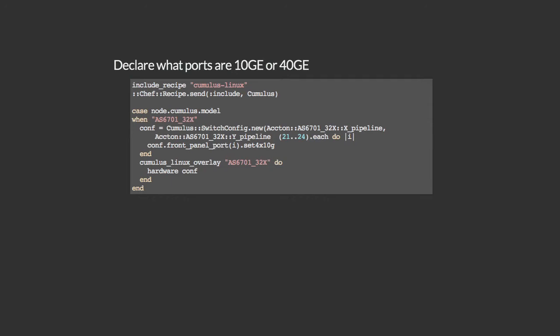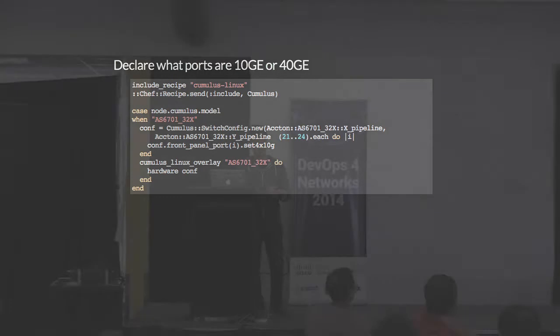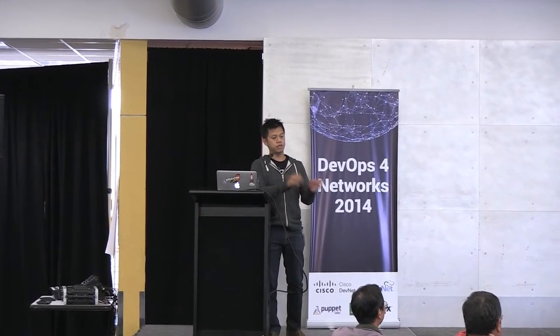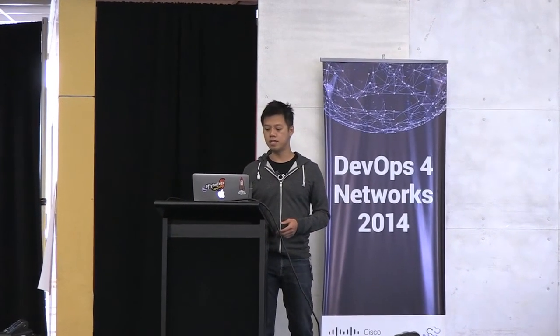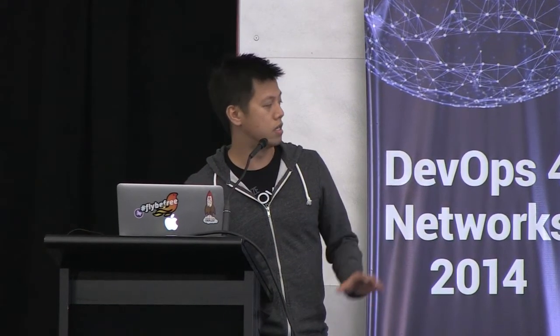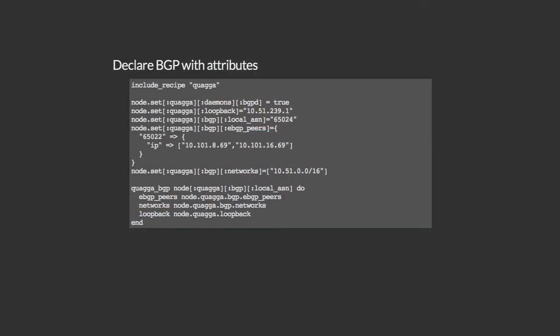So if you've never used Chef before, this is what Chef looks like. This is using some of the cookbooks that we recently open-sourced. It basically programs the port pipeline on the switch. The 40-gig ports can be turned into 40-gig or 10-gig. So we set ports 21 to 24 to 10-gig and then apply the overlay. You can do this right now on your laptop and see a very close Cumulus overlay.